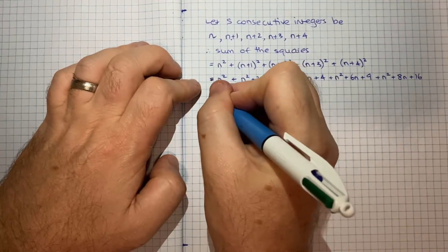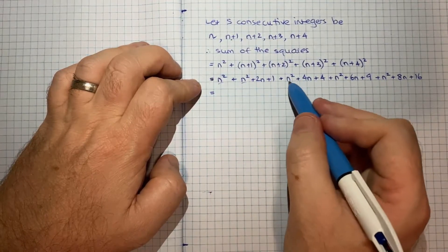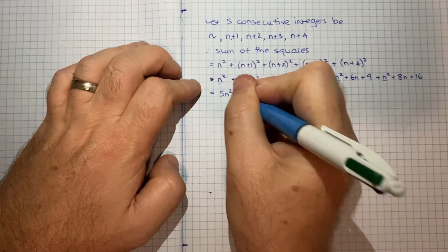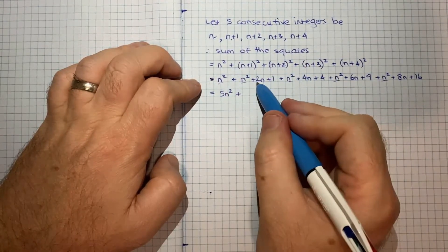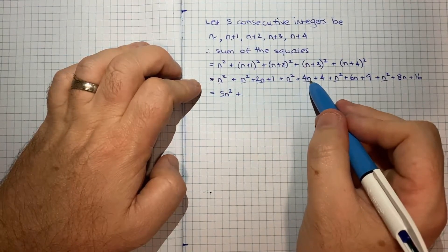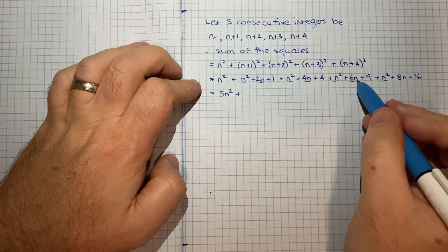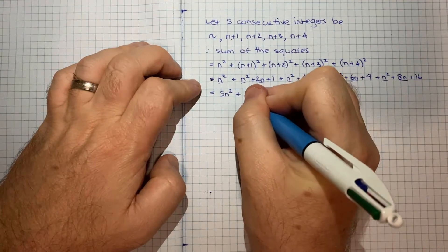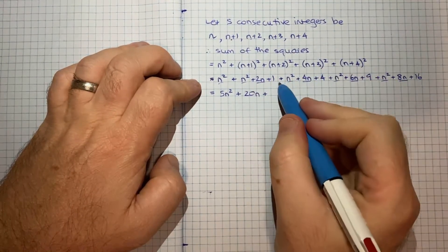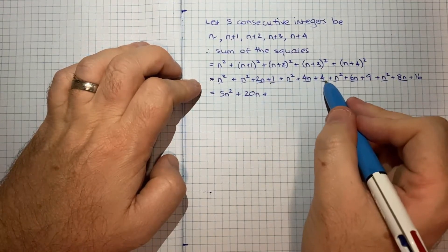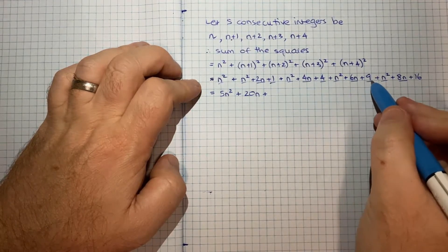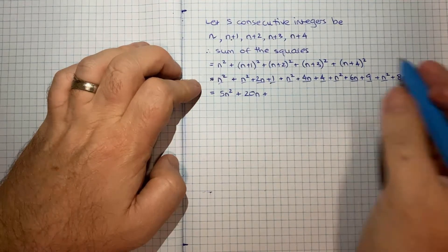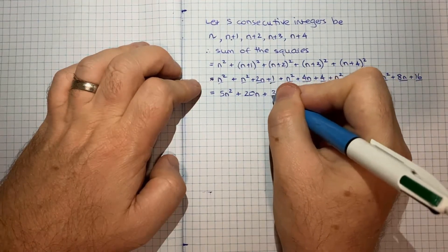So now in terms of n squared, we've got 1, 2, 3, 4, 5. So that's 5n squared plus 2 plus 4 is 6 plus 6 is 12 plus 8 is 20, so plus 20n, plus 1 plus 4 is 5 plus 9 is 14 plus 16 would be 24, 30. So plus 30.